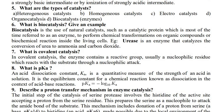Now, the pKa value — this is a very important value. What is pKa? An acid dissociation constant, Ka, is a quantitative measure of the strength of an acid in solution. It is an equilibrium constant for a chemical reaction known as dissociation, in the context of acid-base reactions. pKa is equal to minus log base 10 of Ka.